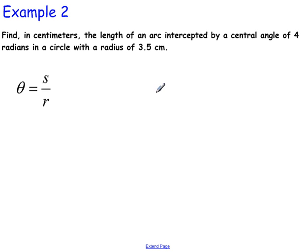Intercepted by a central angle, so we have theta. So theta is four radians. And it says that the radius of the circle is 3.5 centimeters. And we are looking for the arc.